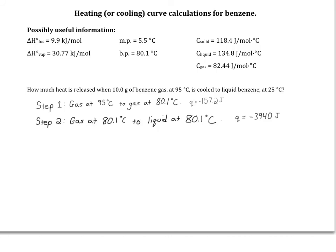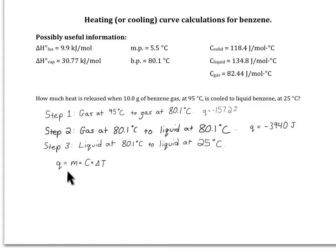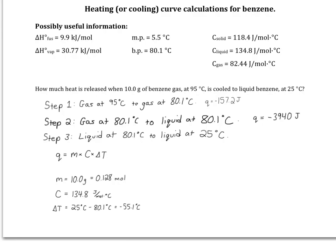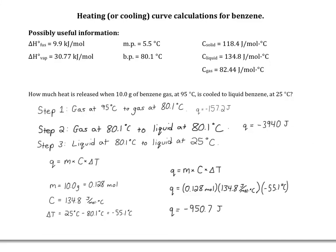Step 3, when liquid benzene at its boiling temperature cools down to 25 degrees Celsius, also includes a temperature change. So we'll need to go back to Q equals M times C times delta T. Our mass is the same as before, 10 grams or 0.128 moles. Our C must be the specific heat capacity of the liquid, and our delta T will only be from 80.1 degrees C down to 25 degrees C. Let's plug the variables into the equation and see how much heat is released. Step 3 releases 950.7 joules of heat.